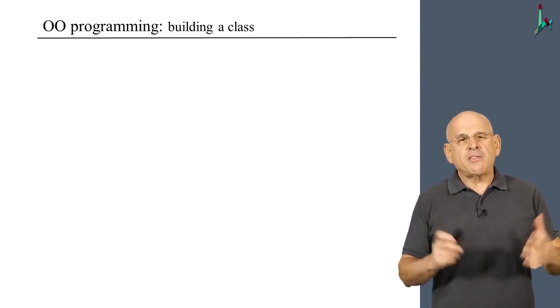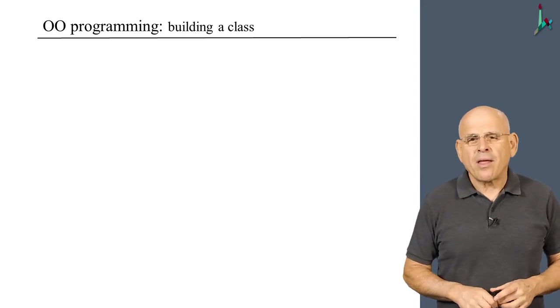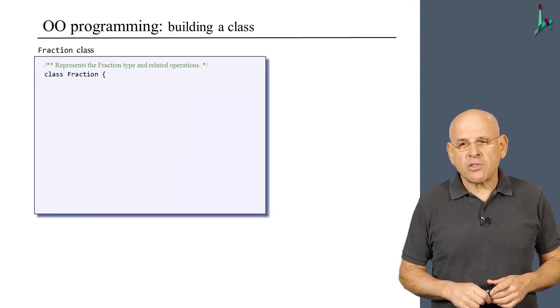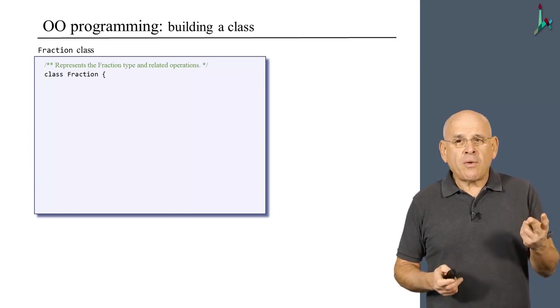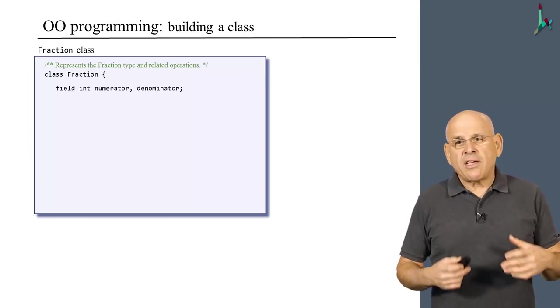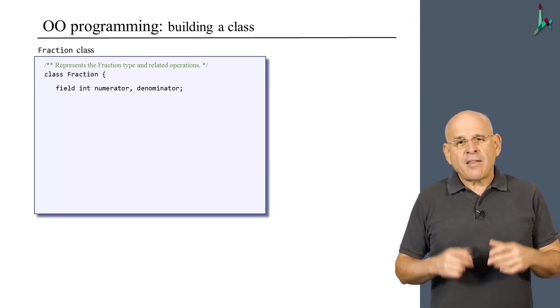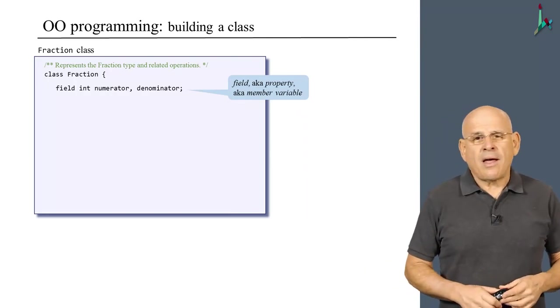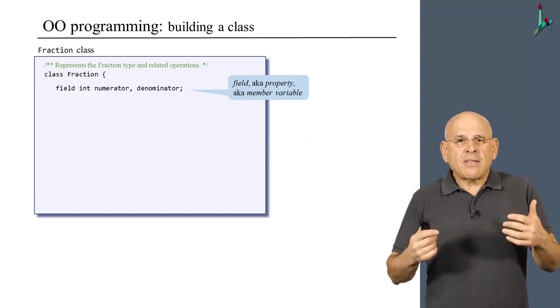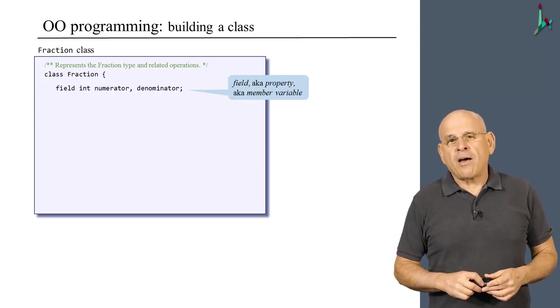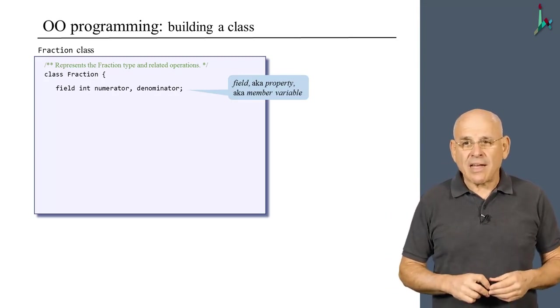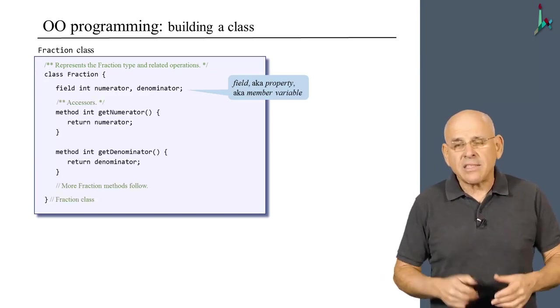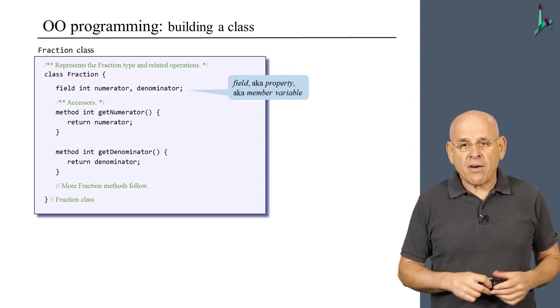So, let's do that. The first thing that you have to ask yourself when you design an abstraction is, what kind of data do we want to store about the objects that this class is supposed to represent? Well, in the case of fractions, we need two pieces of data, which is the numerator and the denominator. And we store these values in two integer typed fields. And these fields are akin to what Java calls member variables and what C sharp calls properties. These are simply variables that describe the data elements of the objects or the instances of this class.